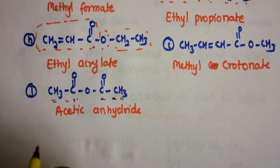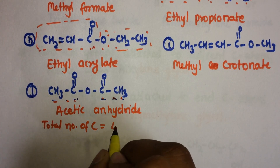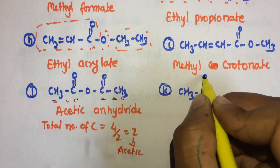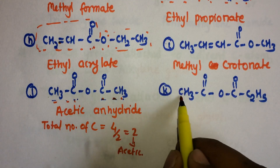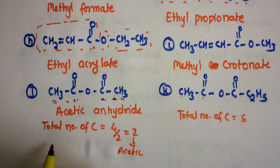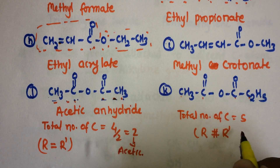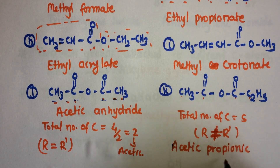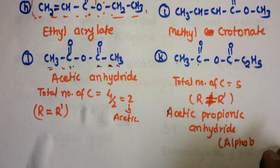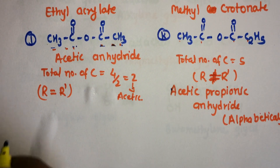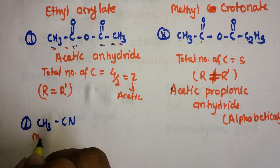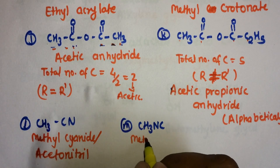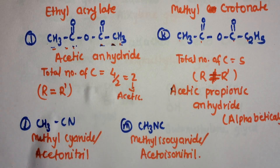Now for anhydrides: acetic anhydride is named by counting the total number of carbon atoms and dividing by two, giving two, which is 'acetic'. When the alkyl groups in an anhydride are not the same, they are named alphabetically. Finally, methyl cyanide is also called acetonitrile, and methyl isocyanide is also called methyl isocyanide. Thank you, guys — hope you understood.